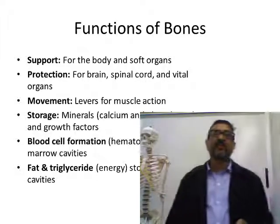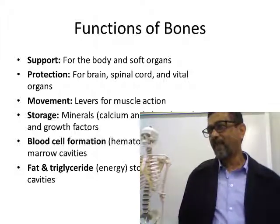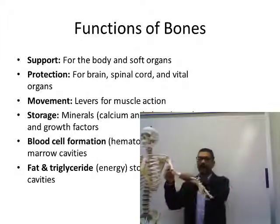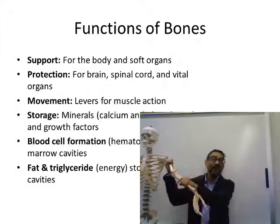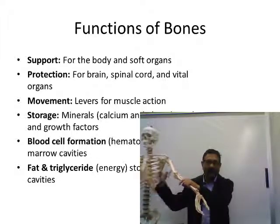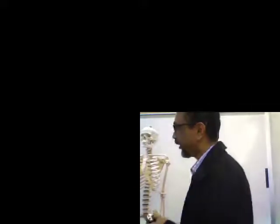Inside the bones you also have fats and triglycerides. In an adult, inside the long bones in the shaft you have yellow bone marrow, which is fat — not red bone marrow. This fat provides energy, because when fat metabolism occurs, a lot of energy is produced. So the stored form of energy is fat.